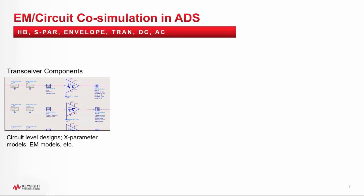5G brings lots of challenges, especially when combining high-frequency circuit design elements of multiple manufacturing technologies with different model abstractions, including physical EM models. All of these must be combined together and co-simulated simultaneously. Here I introduce to you the EM circuit excitation and co-simulation process in ADS, which allows us to combine and co-simulate the transmit chain with all of its components along with the antenna EM simulation and deliver accurate simulation results of the whole system.